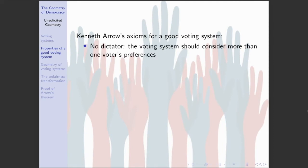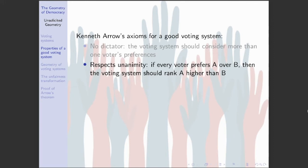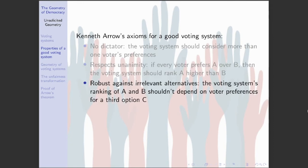That's exactly what mathematician and economist Kenneth Arrow did in the 1950s. His first condition is that the election should have no dictator — no single voter whose preferences override everyone else's. Second, the election should respect unanimity: if every voter prefers option A to B, the voting system should rank A ahead of B as well. Third, the system should be robust against irrelevant alternatives: if the system ranks A ahead of B, that shouldn't change just because a third spoiler option C is introduced.